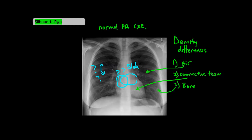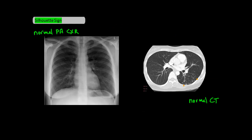To illustrate this point further, let's take a look at some films and CT scans. Look at the descending aorta on this frontal chest X-ray. Notice that you see one border of it clearly, while you cannot see the other border at all, represented by the dashed lines.